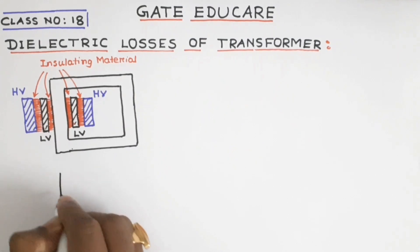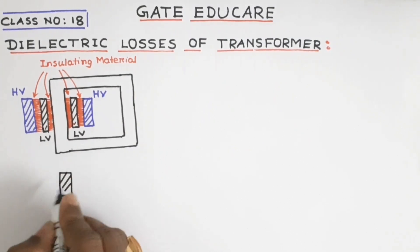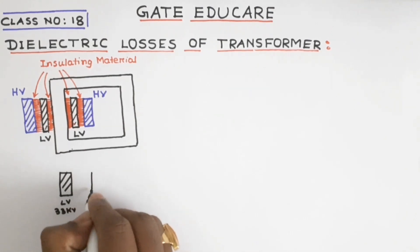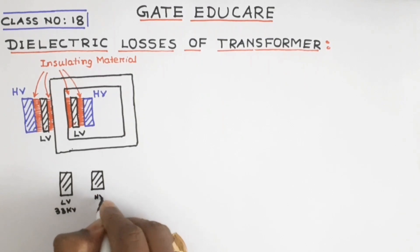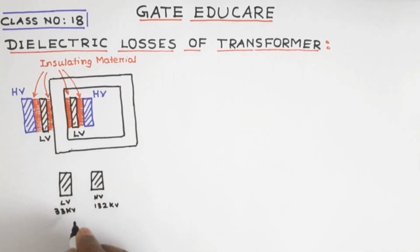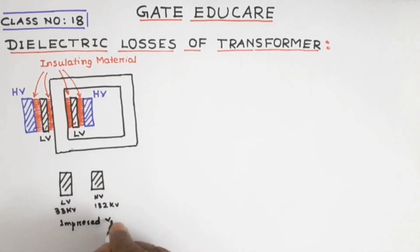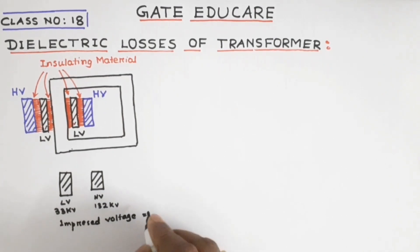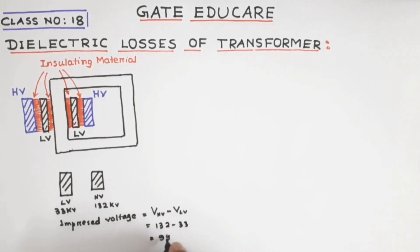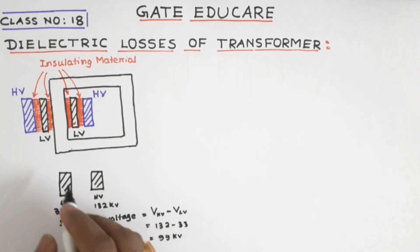Suppose a low voltage winding LV has a voltage of 33 kV and a high voltage winding HV has a voltage of 132 kV. The impressed voltage between HV is given by the high voltage minus the low voltage winding, that is equal to 132 minus 33 kV, which becomes 99 kV. This 99 kV is the impressed voltage between these two windings.